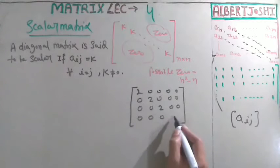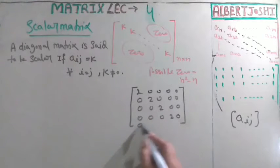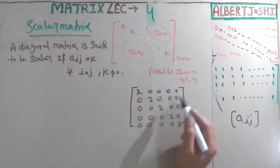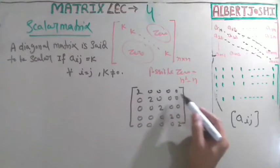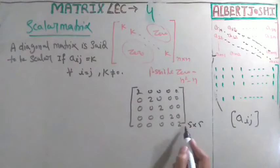Then 0, 0, 0, 0, 2. One, two, three, four, five rows and columns. This is 5 by 5. You can see the value of k equals 2. That is the scalar matrix.